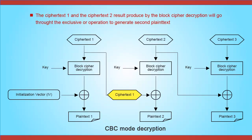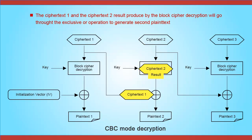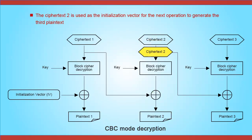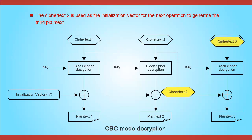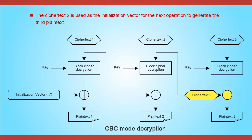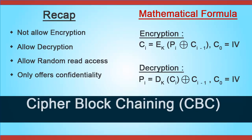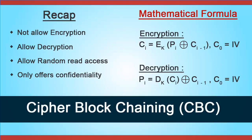Ciphertext 1 and the result produced by the block cipher decryption of ciphertext 2 will go through the exclusive OR operation to generate the second plaintext. The second ciphertext is then used as the initialization vector for the next operation to generate the third plaintext. The process continues until all the ciphertext has been decrypted into plaintext. That is all about cipher block chaining mode.